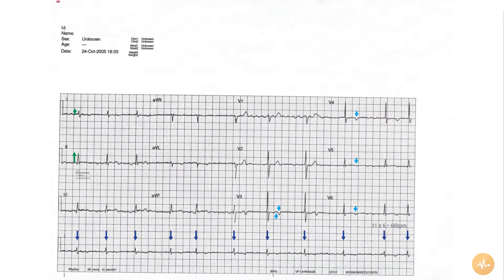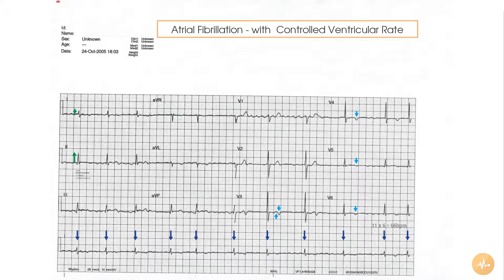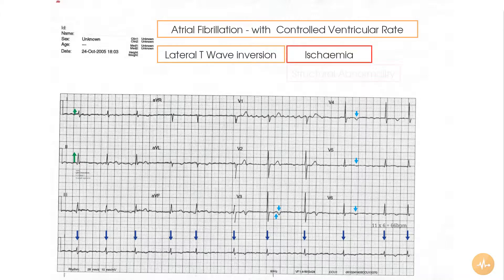In summary, this 12-lead ECG recorded from a patient with high alcohol consumption shows atrial fibrillation with a controlled ventricular rate and some lateral T wave inversion. The T wave abnormalities may represent ischemia, or perhaps a structurally abnormal heart. The absence of symptoms would suggest the latter is more likely.